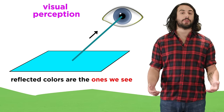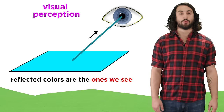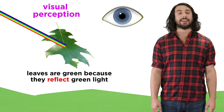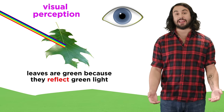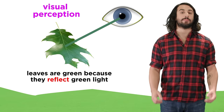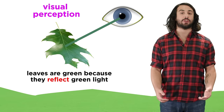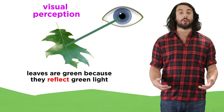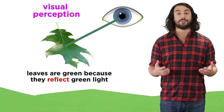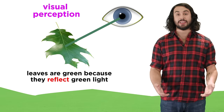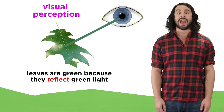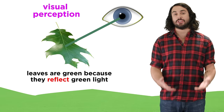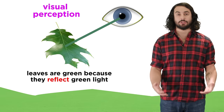The colors that are reflected are the ones we see, so when you see a green object like a leaf, it's because green is the predominant color that is not absorbed, but rather reflected to meet your eyes, and not because there is some inherent greenness to the leaf.